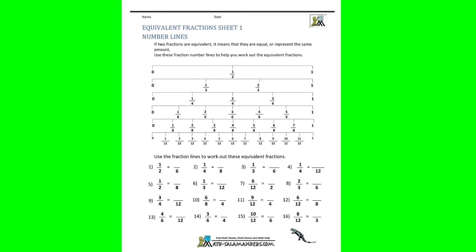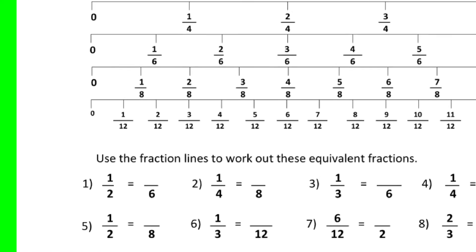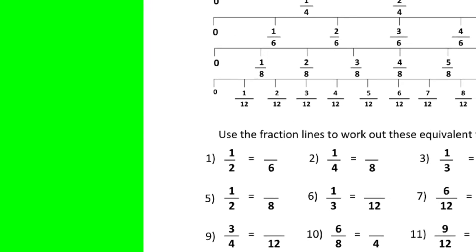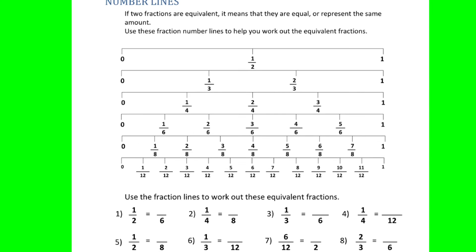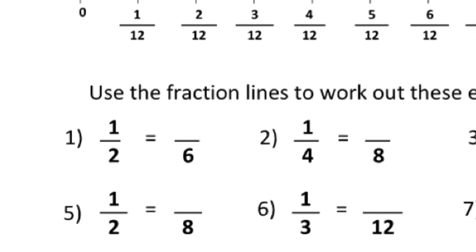What we had done yesterday is we had used some number lines to identify equivalent fractions. For example, we have the equivalent fraction 1 half equals some number over 6. And if you want to identify what that number is, you can look at these number lines that are divided into fractions and you can see if you look at the fraction 1 half, that's the exact same size as the fraction 3 over 6. So the missing number there is 3 over 6.